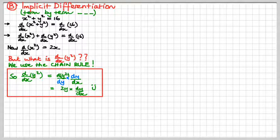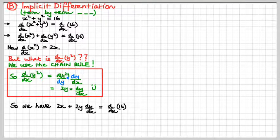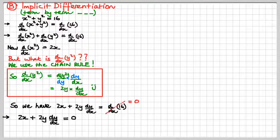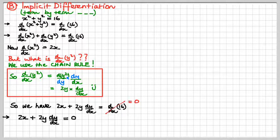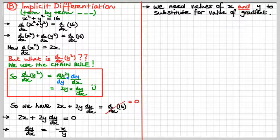Now we can proceed. We know d/dx of x squared is 2x, and d/dx of y squared is 2y·dy/dx. So: 2x plus 2y·dy/dx equals 0. Now we just solve for dy/dx, which will be in terms of x and y — that's fine. We need to find the values of x and y and substitute them in to get the value of the gradient.